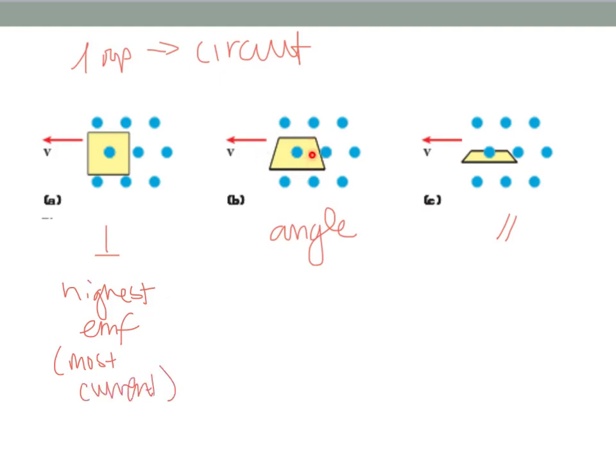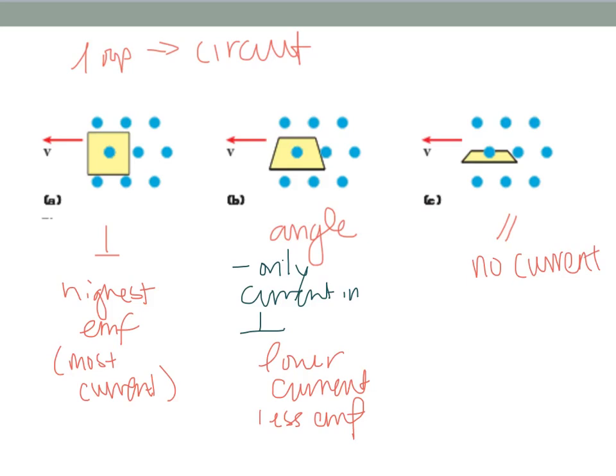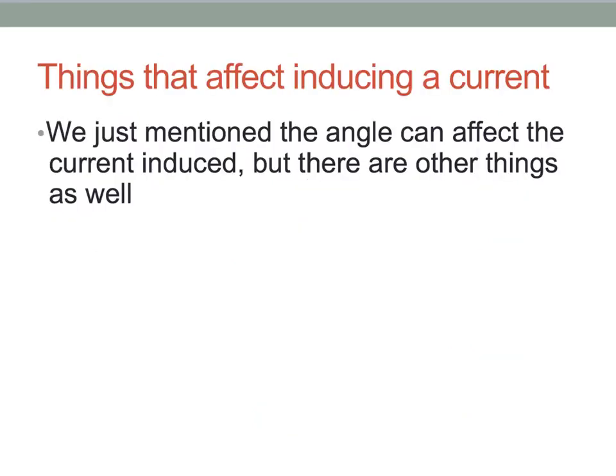When it's at an angle like this one over here, then it's only inducing current in the parts that are perpendicular because the angle matters. So it only induces current in the parts that are perpendicular. So this one has less, a lower current or less EMF. And then this one here that is parallel, this one has no current because none of those wires are perpendicular. So angle matters.